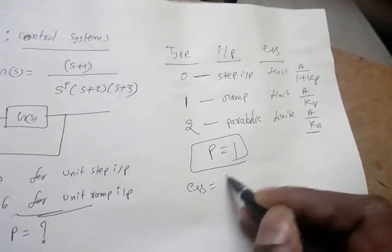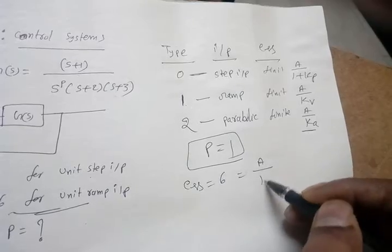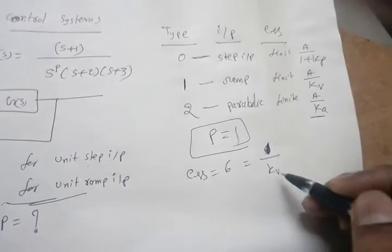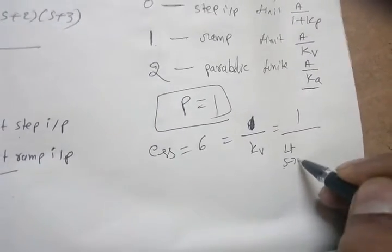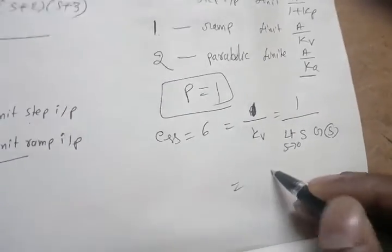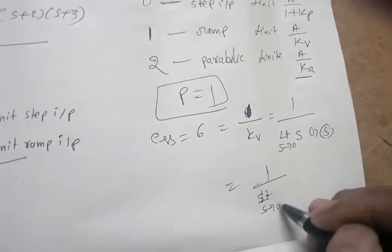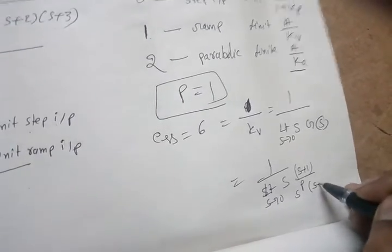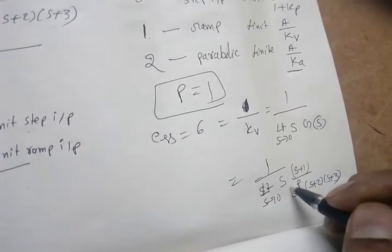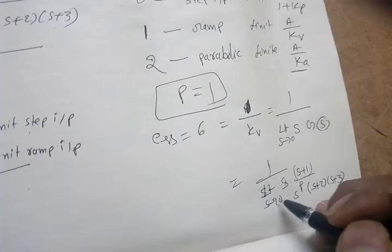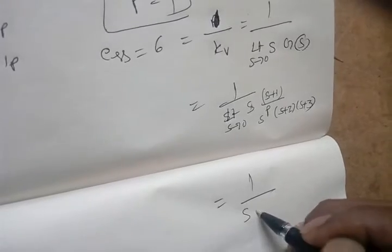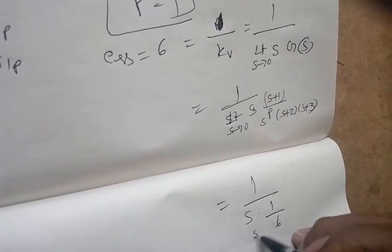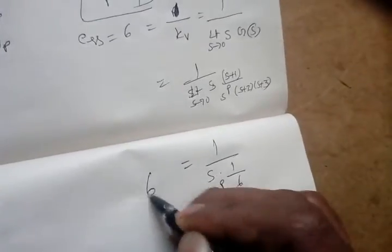Or, steady state error is equal to 6, which is equal to A by Kv. So unit ramp, amplitude is 1. So what is Kv? The formula for Kv is equal to limit S tends to 0, S into G of S. So what I can solve, limit S tends to 0, S into G of S is given, S plus 1 by S to the power P into S plus 2 into S plus 3.